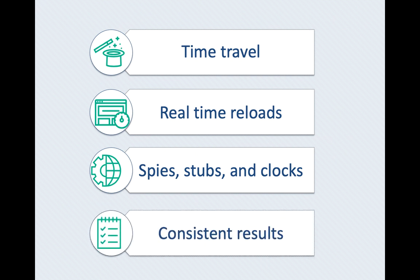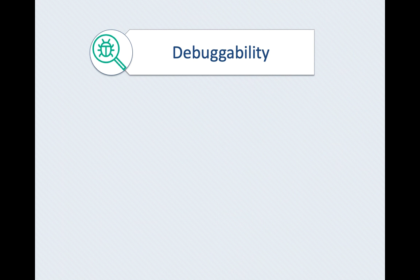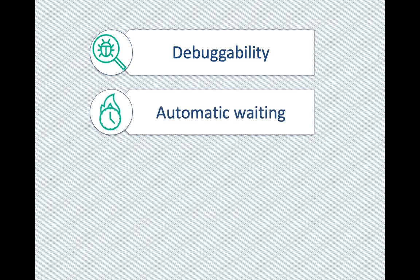Consistent results: the tests are flake-free. Debugability: readable errors and stack traces make debugging so easy in Cypress — you no longer have to guess why your tests are failing. Automatic waiting: Cypress automatically waits for commands and assertions before moving on, so you don't have to add waits or sleeps in your tests.